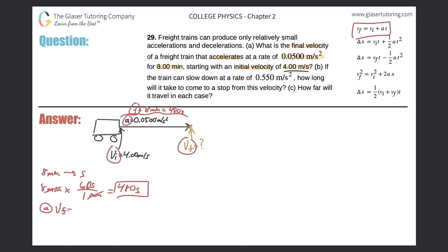The final velocity is equal to the initial velocity plus the acceleration multiplied by time. The final velocity is what I'm looking for. The initial velocity the problem told me was 4.00. The acceleration was 0.0500, and the time value was 480 seconds.